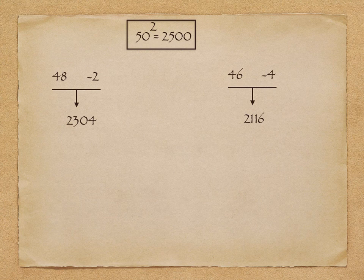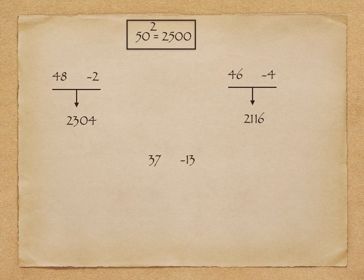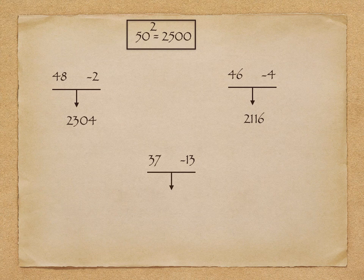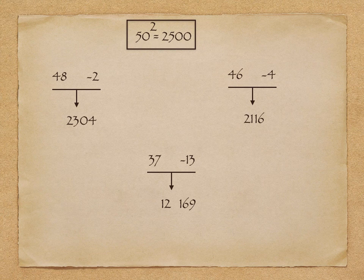To get the answer, I will subtract this 13 from 25, so it will be 12, and the square of 13 is 169. Now I need to adjust this 169 in two-digit form, so I will add this 1 to the number 12, so it will be 13, and 1369 is the final answer.